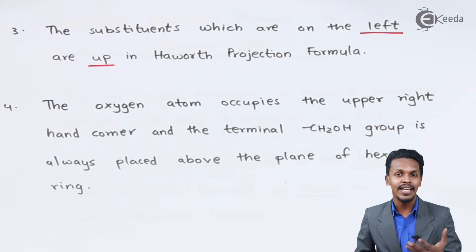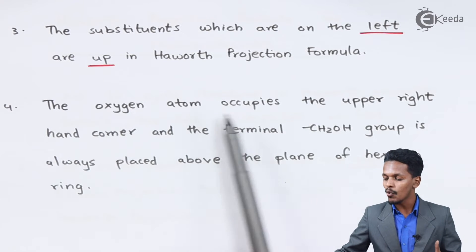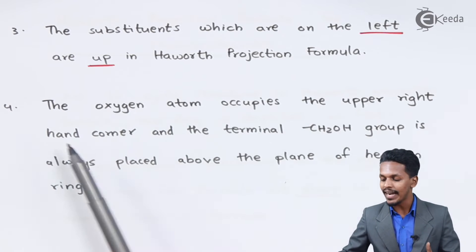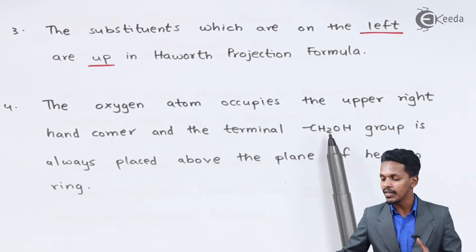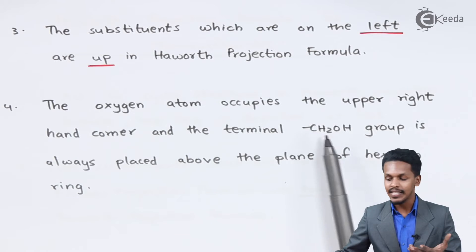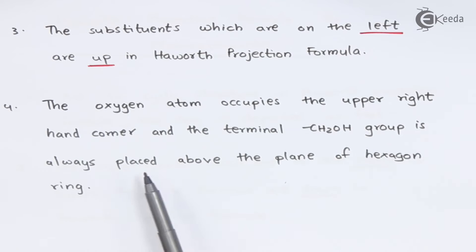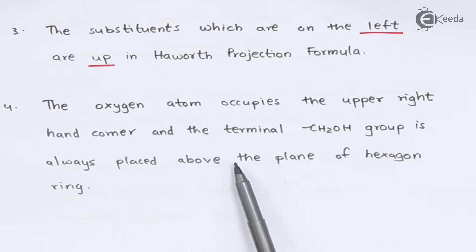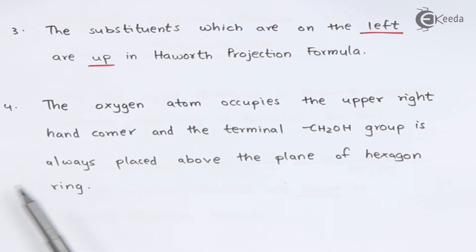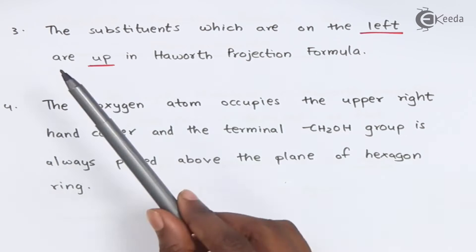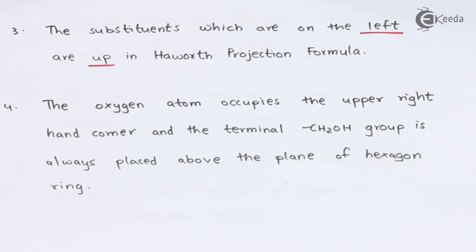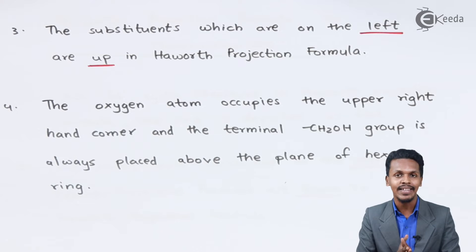The last rule is that the oxygen atom occupies the upper right-hand corner, and the terminal CH₂OH group is always placed above the plane of the hexagon ring. These four points I will explain with the help of an example.